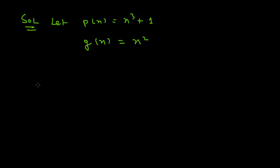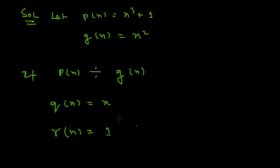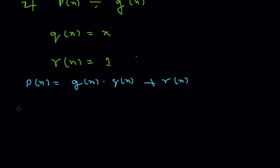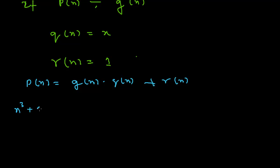If we divide p(x) by g(x), then the quotient q(x) = x and the remainder r(x) = 1. Let us verify that the division algorithm is satisfied. The division algorithm is p(x) = g(x) · q(x) + r(x), and this equals x³ + 1.